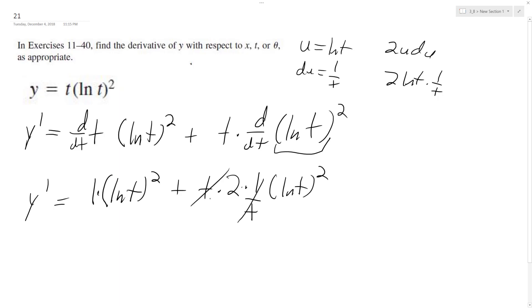So the 1 over t and the t cancel out, and we're simply left with y prime is equal to natural log of t squared plus 2 times natural log of t.